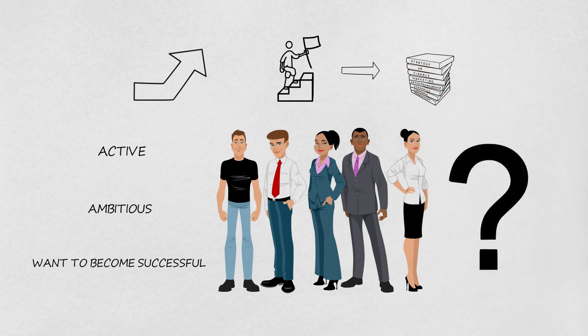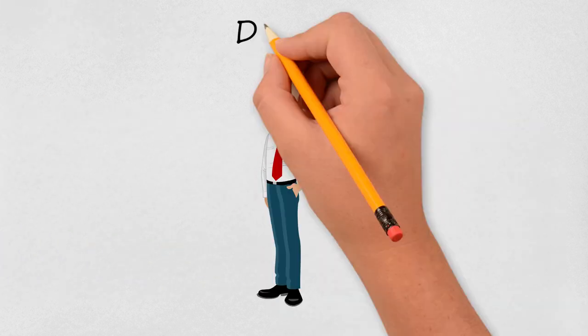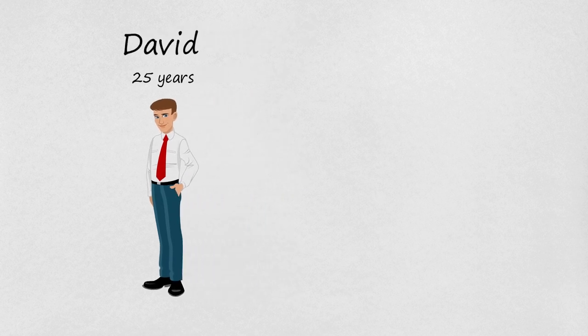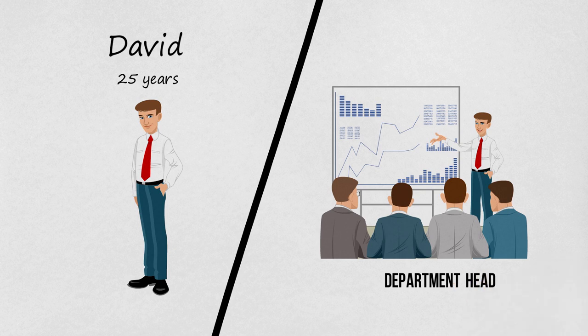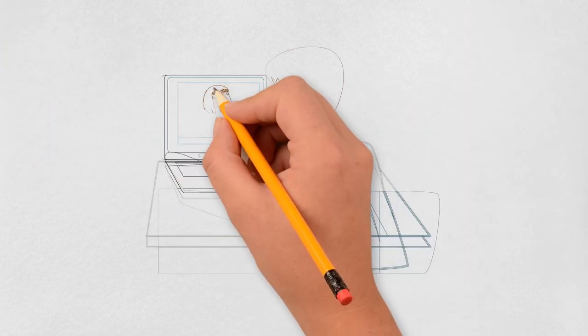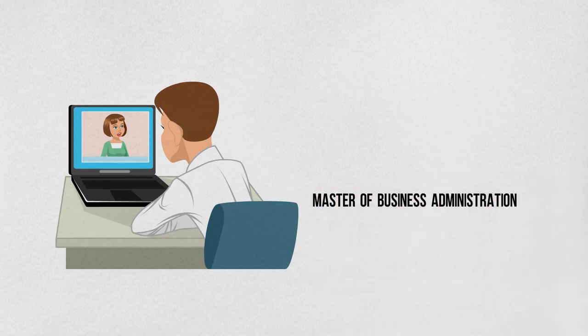Which program will be suitable for each of them? Let's start with David. He is 25 years old and very smart. He's already taken up the post of a department head at a medium-sized company. He has only three years of management experience. The admission expert of EMAS has recommended that David choose a Master of Business Administration program, or MBA, because of the following reasons.